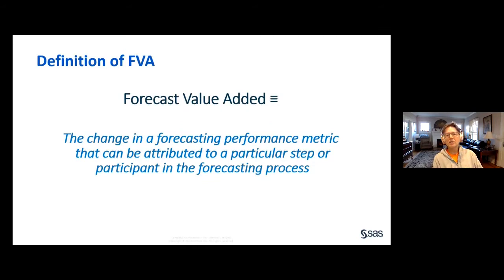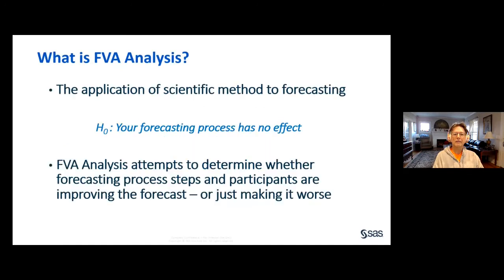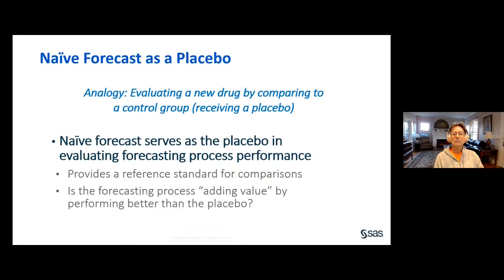FVA is defined as the change in a forecasting performance metric that can be attributed to a particular step or participant in the forecasting process. It's measured by comparing the results of a process activity to the results you would have achieved without doing that activity, so FVA can be positive or negative. You can think of FVA analysis as the application of basic scientific methods to forecasting — starting with a null hypothesis that your forecasting process has no effect. There's a nice analogy to testing a new drug against a placebo, with the naive forecast serving as the placebo.